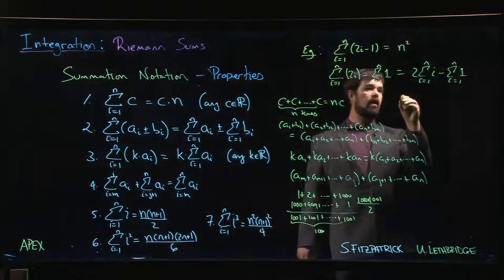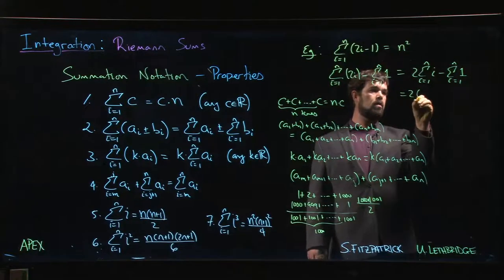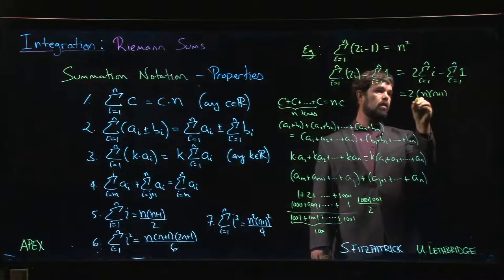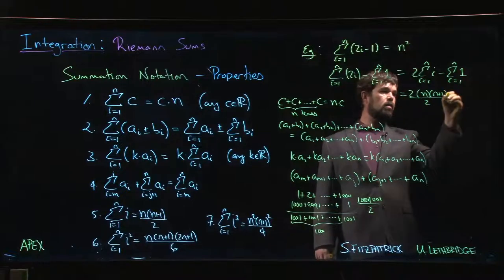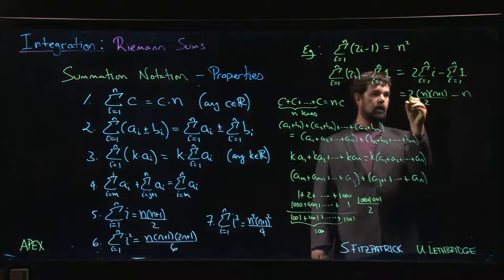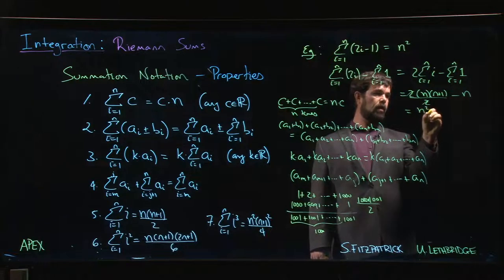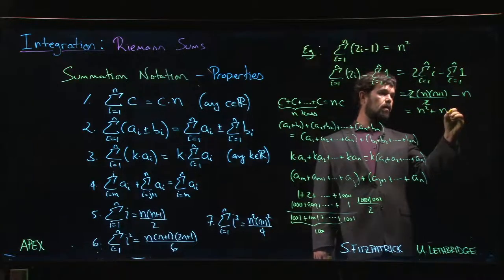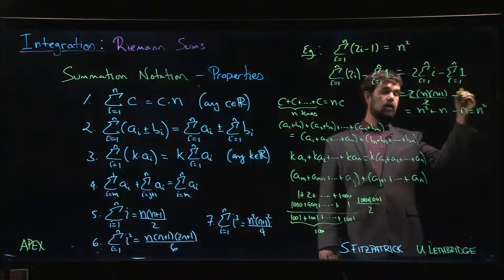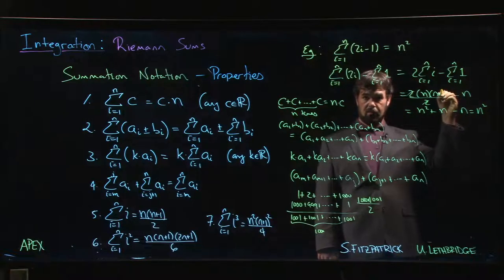But now I can use summation formulas one and five. I'll use one with c equal to one, and so I have two times n times n plus one over two minus n. Twos cancel, multiply that n through, I have n squared plus n minus n, and that gives us n squared as promised.